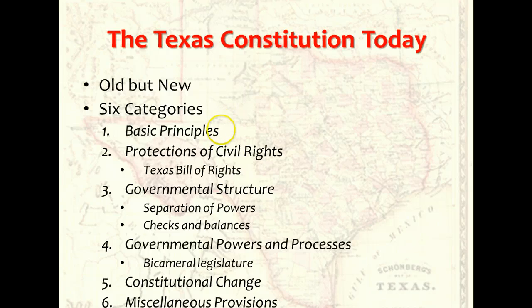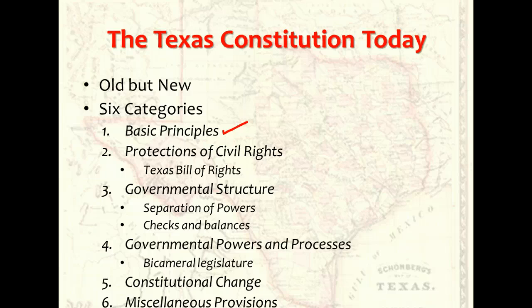Basic principles. Every state's fundamental law is built on the principles of popular sovereignty and limited government. That is, each state constitution recognizes that government exists only with the consent of the people, and that it must operate within certain, often closely defined, bounds. The Constitution of Texas pledges the preservation of a republican form of government and recognizes Texans' rights to alter, abolish, or reform their government.